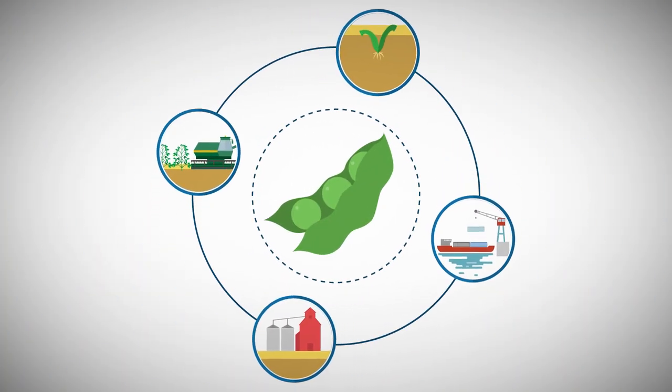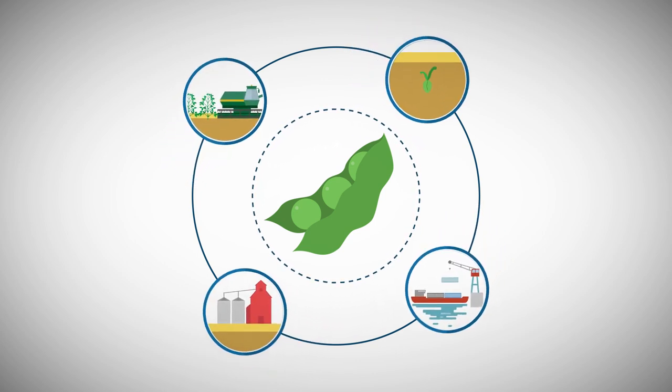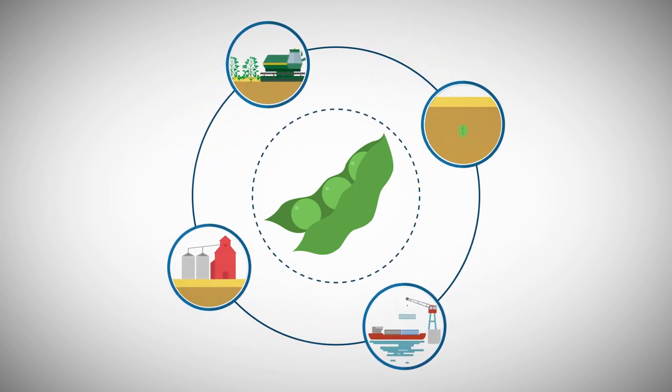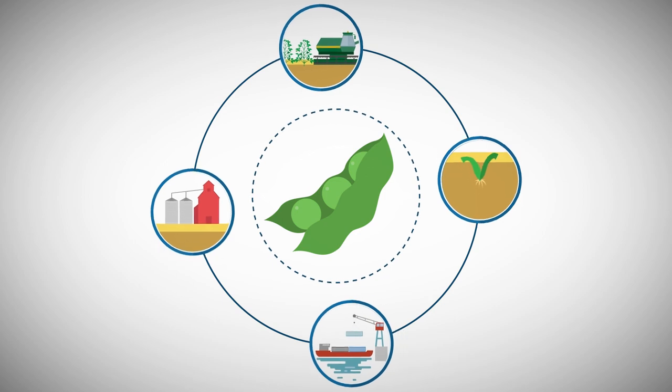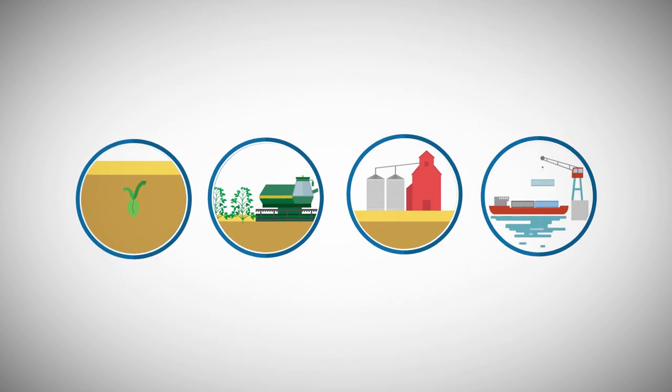At every stage of the soybean production chain, from planting, growing and harvest, to exporting and processing, market participants face the risk of adverse price movements caused by the vagaries of the market in supply and demand.